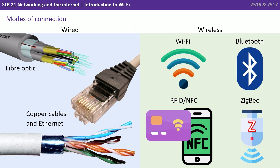At the end of the day, all computing devices are connected together to form networks in one of two broad ways: either wired, for example fibre optic, proper cables and ethernet, or wireless, for example Wi-Fi, Bluetooth, and RFID.